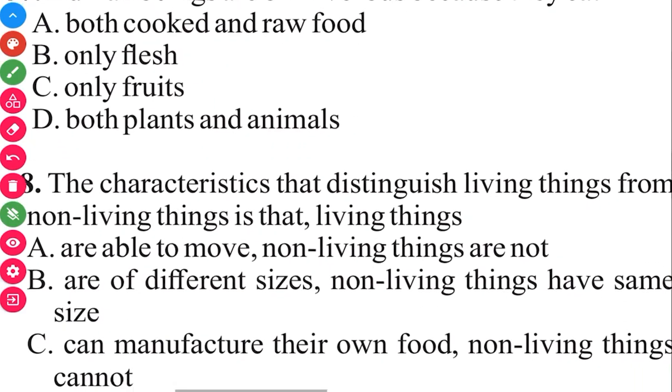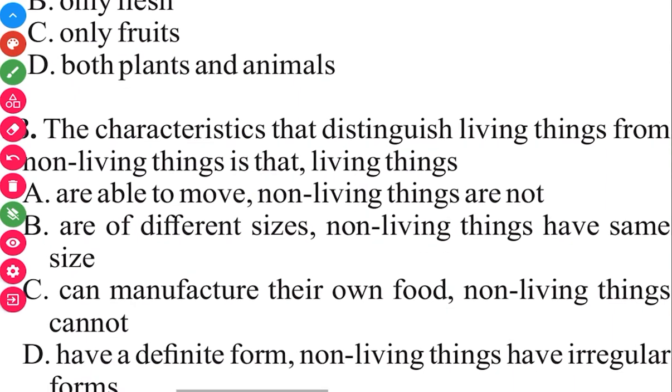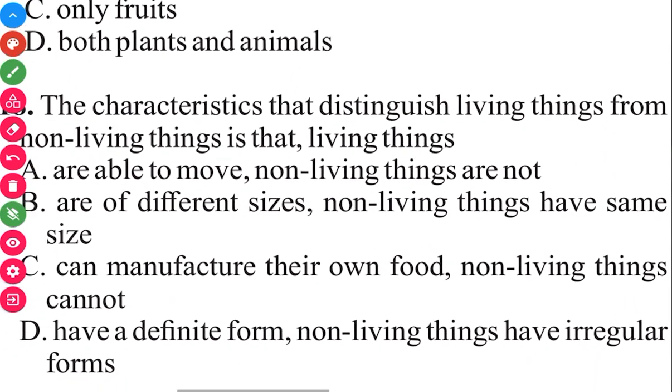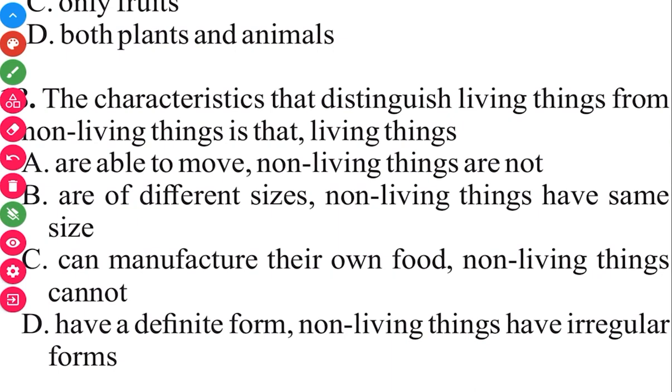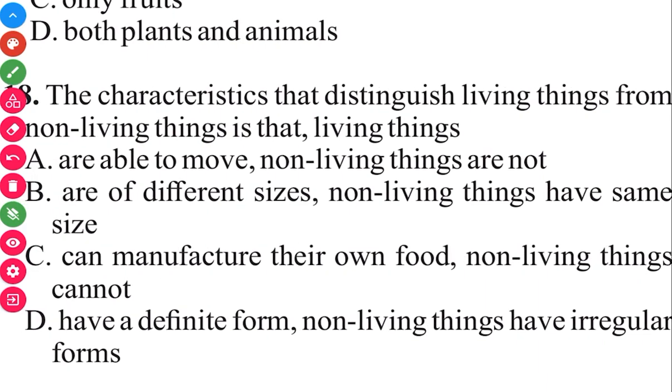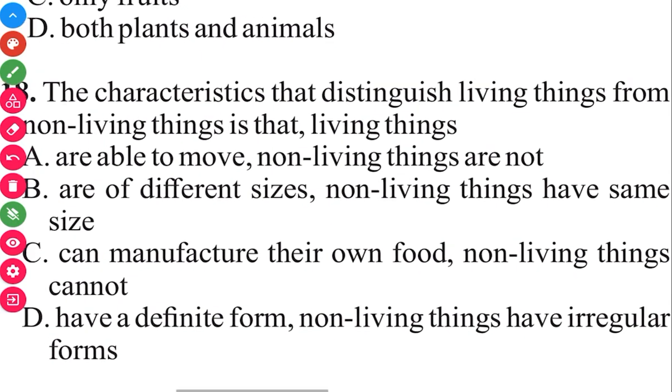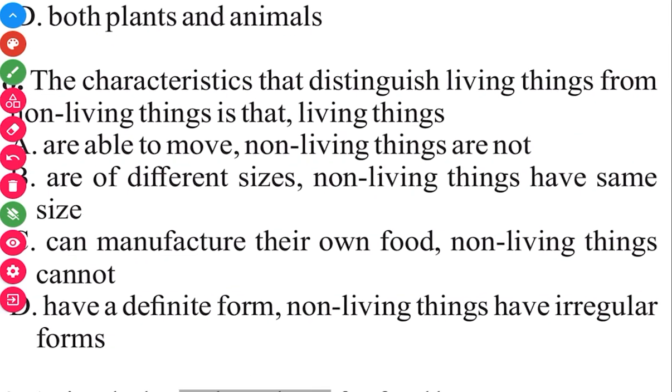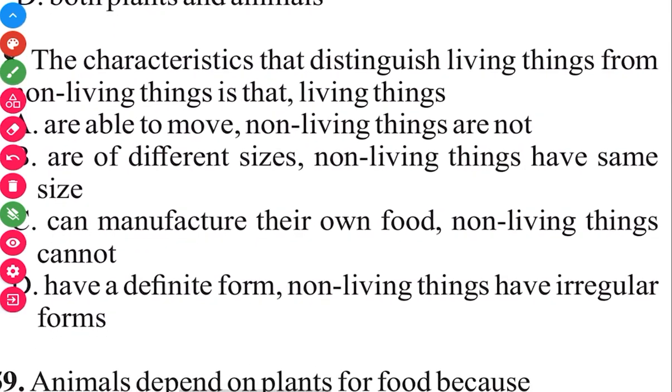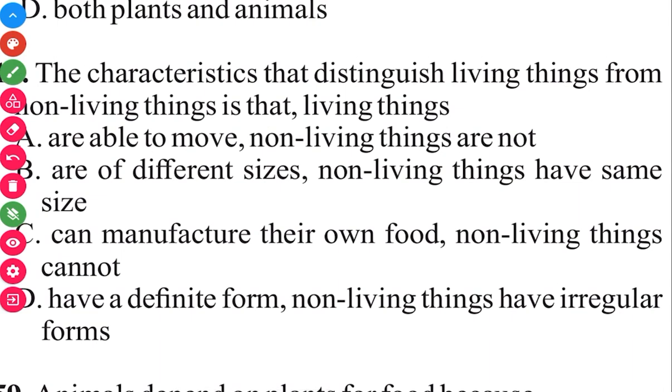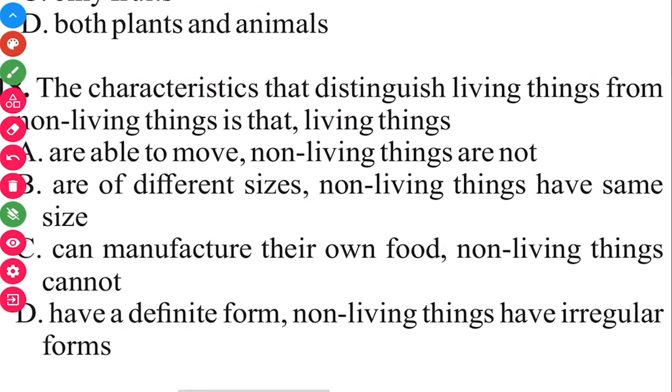Question 58. The characteristics that distinguish living things from non-living things is that living things are able to move. Non-living things are not. The answer in 3, 2, 1 is A. Living things are able to move. Non-living things are not.